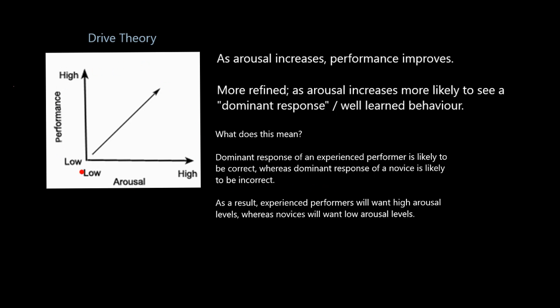The dominant response of a novice — a beginner, someone who is new to a sport — is likely to be incorrect. So what we're actually saying is: as arousal increases, performance gets better, as long as you are an experienced performer. As arousal increases, you're more likely to produce a dominant response, and your dominant response is more likely to be correct if you are experienced and well-trained than if you are a novice. As a result, experienced performers will want higher arousal levels, whereas novices will want lower arousal levels. How many Premier League teams give first-team debuts to their youngsters when it's the third round of the FA Cup away, playing in front of 3,000 fans? Those lower arousal levels suit a novice much better than a highly experienced performer.